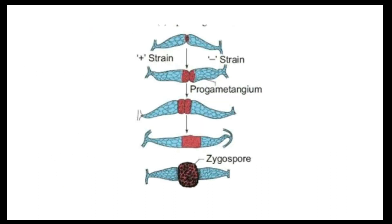In gametangial copulation, the gametangia move toward each other and come in contact. At the point of contact, the wall dissolves and they form one unit. Gradually the size increases and a sexual spore is formed. The spore formed is called a zygospore.